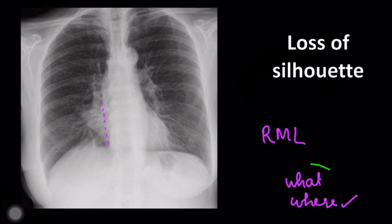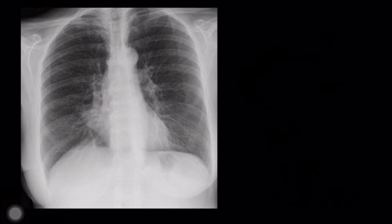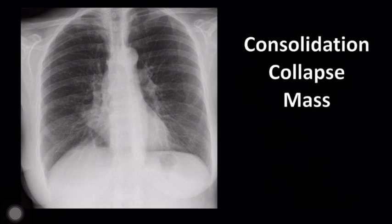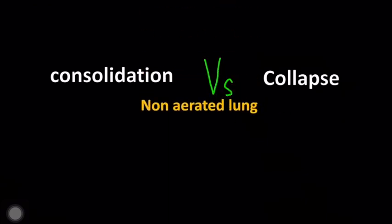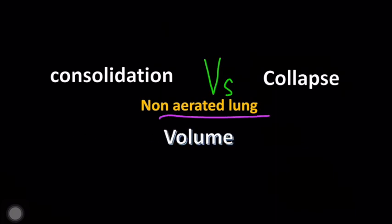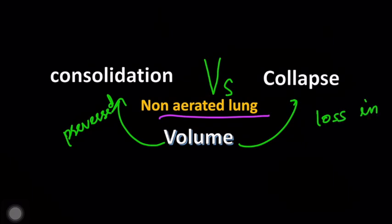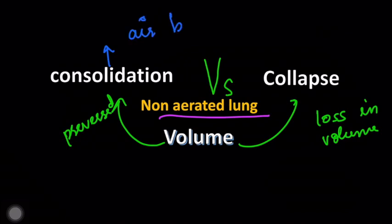Now we have to define the opacity in more detail. Consider three possibilities for opacity on a chest radiograph: consolidation, collapse, and mass. How do we differentiate between consolidation and collapse? Remember, both are causes of non-aerated lung, but the difference is that in consolidation the volume is preserved, whereas in collapse there is loss of volume. An added finding for consolidation is the presence of air bronchogram.